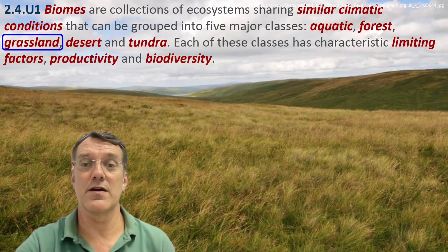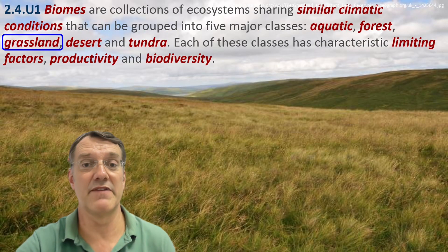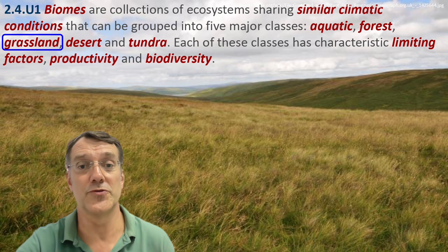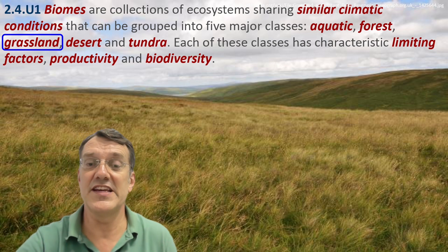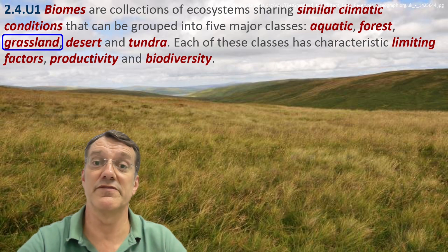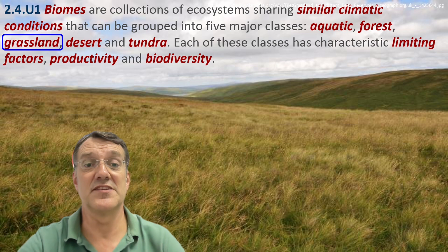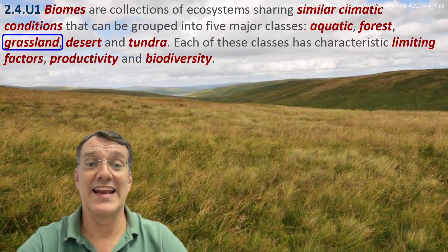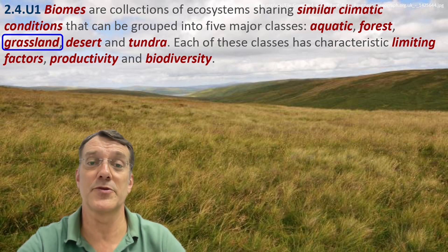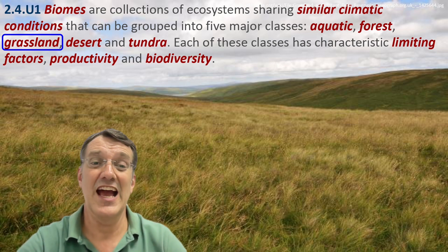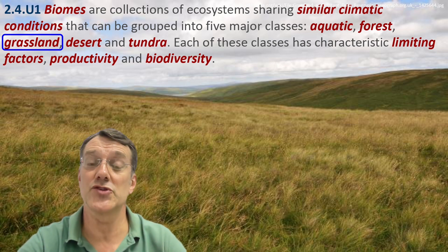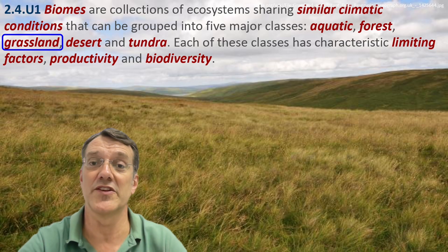Grasslands are characterized by grass as the dominant vegetation type with just a few trees. These ecosystems receive less precipitation than forests, their productivity is moderate, and it can be limited by seasonal temperature extremes and relatively slower nutrient cycling.